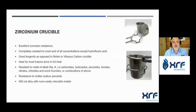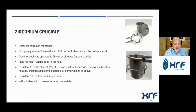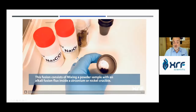Zirconium crucibles are used for this type of fusion because they have excellent resistance to corrosion and to acids except hydrofluoric acid. Their lifetime is longer compared to nickel or carbon crucibles, they are resistant to high temperatures, and resistant to alkali fluxes such as sodium, potassium, and lithium carbonates, hydroxides, peroxides, and even borates. Zirconium crucibles are resistant to sodium peroxide — one of the most commonly used fluxes — and will not alloy with metals during fusion.